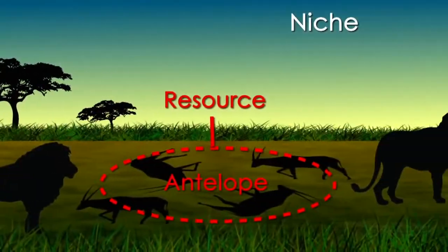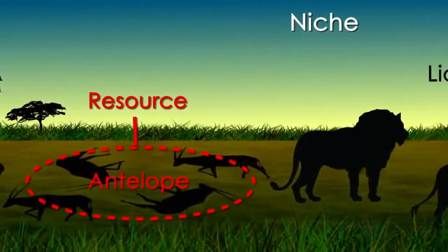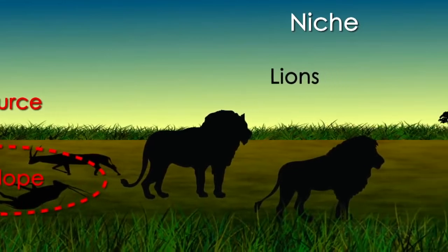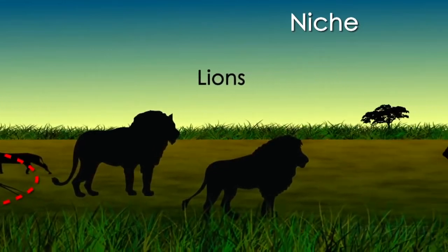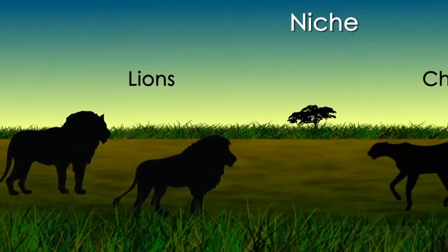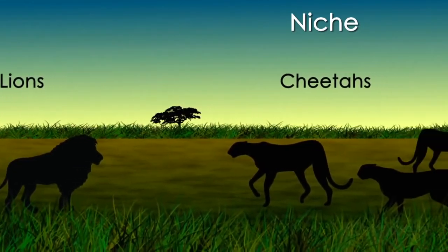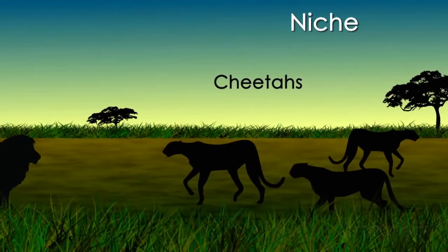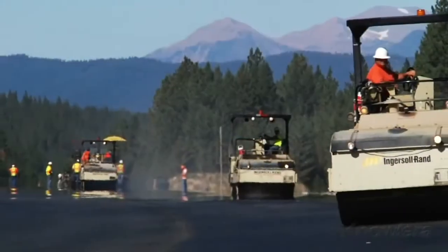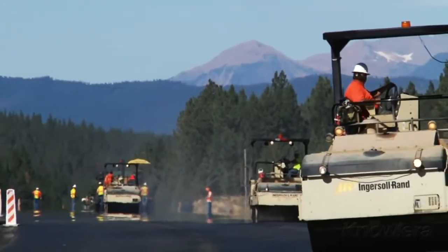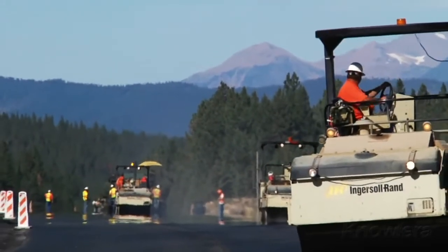Two organisms cannot occupy the same niche for very long. Eventually, one will outcompete the other for food and other resources, forcing the other to move or to go extinct.